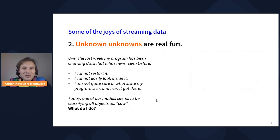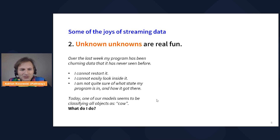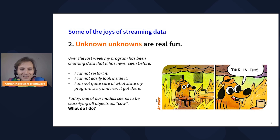Point two: the world of streaming is full of unknown unknowns. Imagine that for the last week or longer, your program has been running in streaming mode, taking in data all the time, processing data it has never seen before. As the software developer, you cannot restart it, you cannot easily look inside your program to see what it's doing, you're not quite sure what state it's in or how it got there. And today things started to go wrong — one of our models seems to be misclassifying, suspiciously classifying all objects it sees as cow. What do you do now? You cannot do too much. You can hope that perhaps everything you're seeing today really is cows, but maybe things are very wrong.